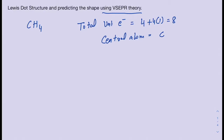You want to put the central atom in the middle and then put the surrounding atoms all around it. There are steps to drawing Lewis structures and I have another video where I've gone through those steps. If you have trouble drawing Lewis structures, make sure you watch that video first and then come back to this one. The next step is putting an electron pair — or a bond — between the central atom and the surrounding atoms.